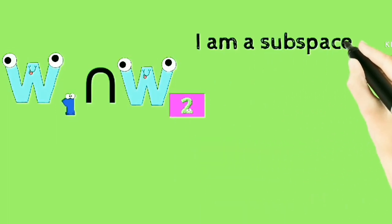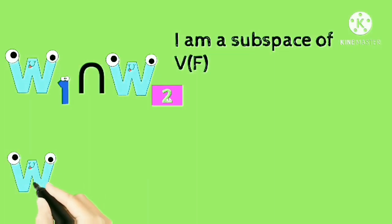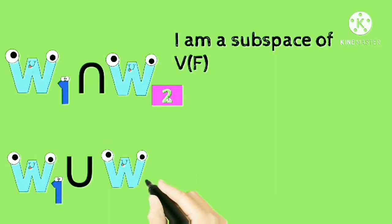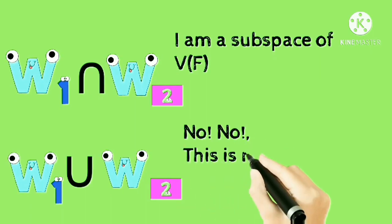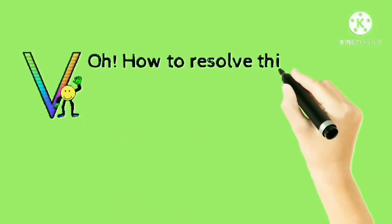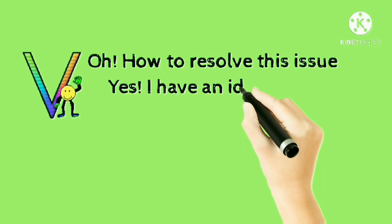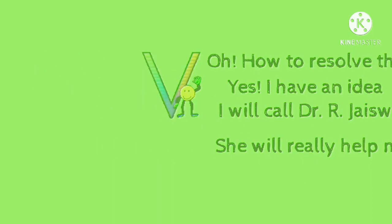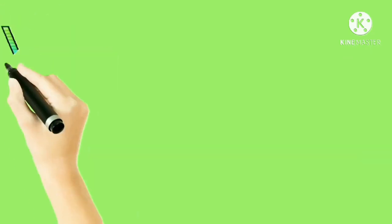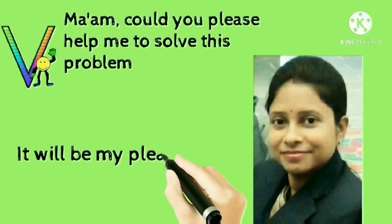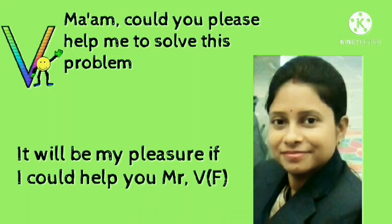W1 union W2 claims: I am a subspace of yours, that is VF. But W1 intersection W2 replies: No, it's not true — it is me who is actually a subspace of yours. VectorSpaceVF wonders how to resolve this issue, then gets an idea to call Dr. R. Jaiswal for help. Ma'am, could you please help me solve this problem? It will be my pleasure to help you, Mr. VectorSpaceVF.